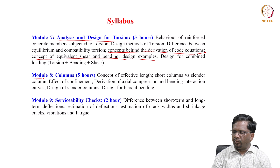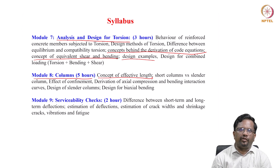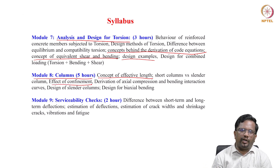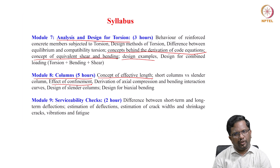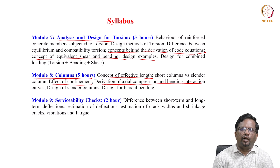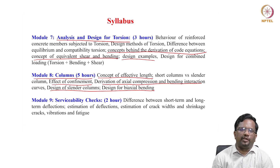Module 8 covers columns. To distinguish between short and long columns, we establish the concept of effective length and use slenderness ratios. We will also discuss confinement — the important role that stirrups, ties, or spirals play in confining the concrete core, particularly for axial load in columns. We will then derive axial compression-bending interaction curves, move on to design of slender columns, and design of sections for axial bending.